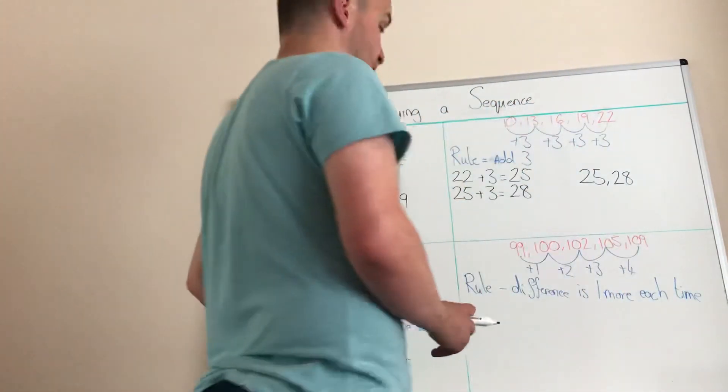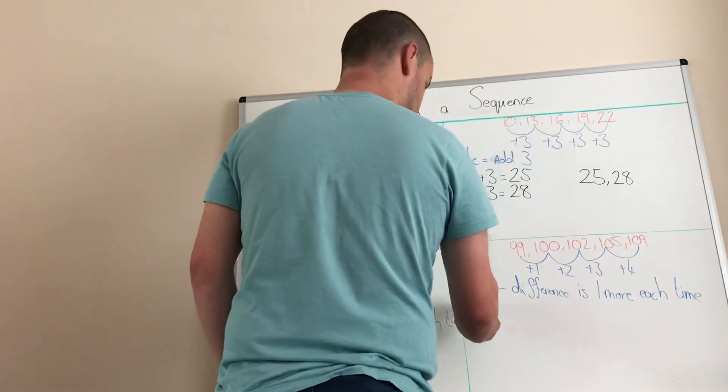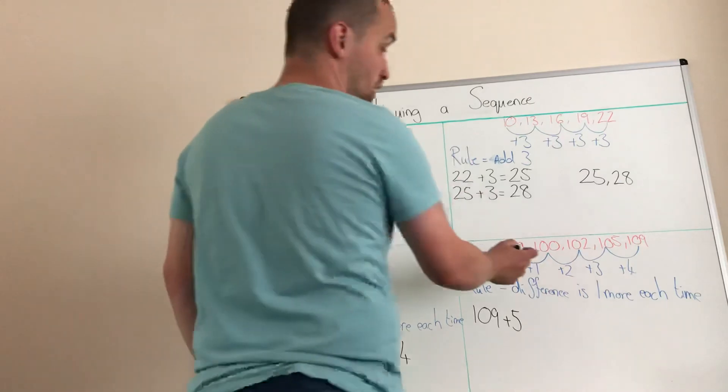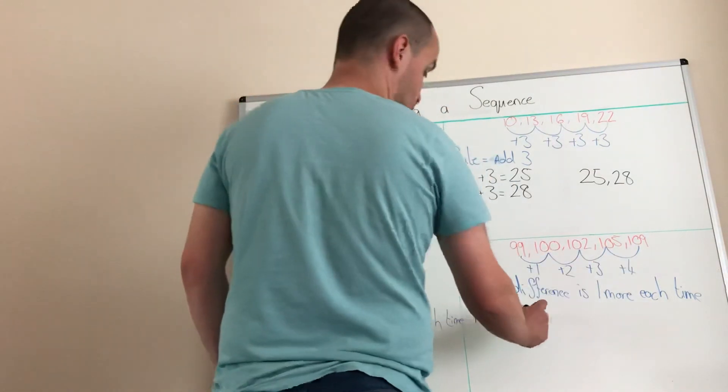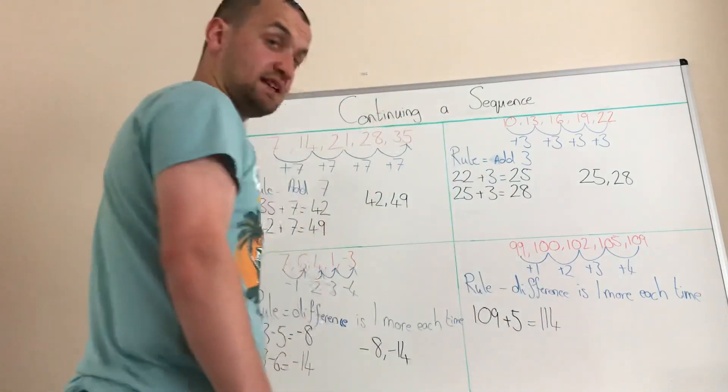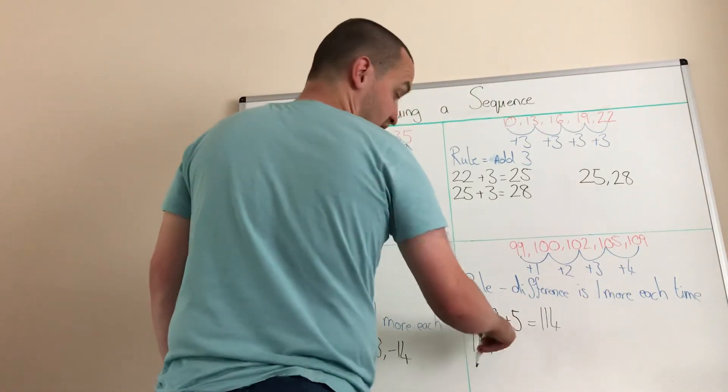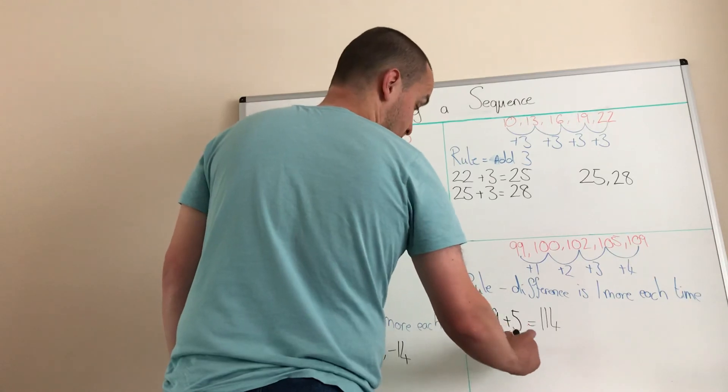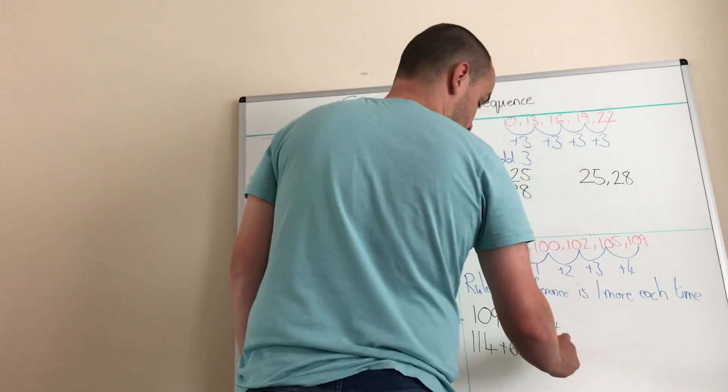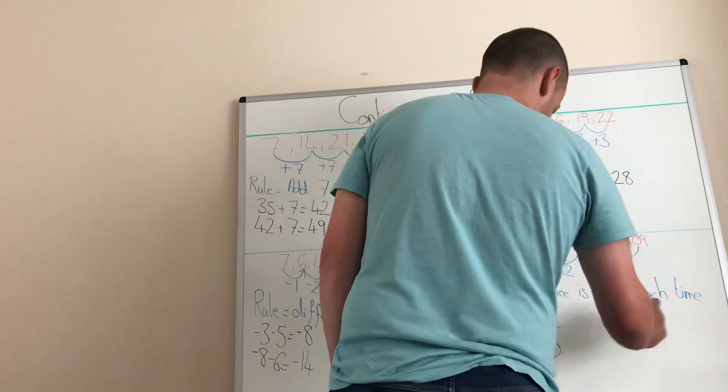So our difference is one more each time. Our last difference was plus four. So our next difference, we're going to do 109 plus five. Plus one, plus two, plus three, plus four, plus five. So 109 plus five is 114. We take our next term, so 114. Now, last time we added five, this time we're going to be adding six. The difference is one more each time. So we get 120. So our next two terms are 114 and 120.